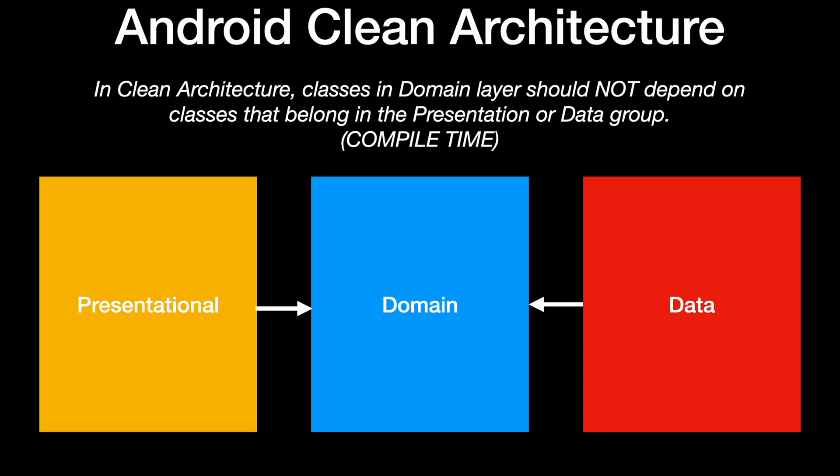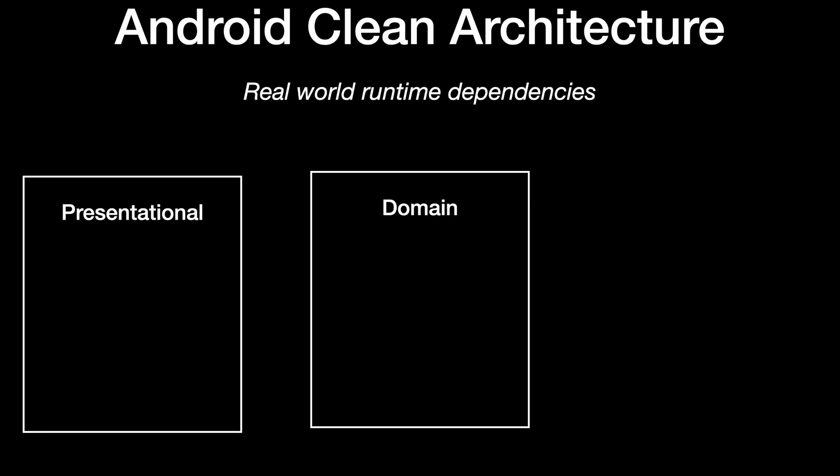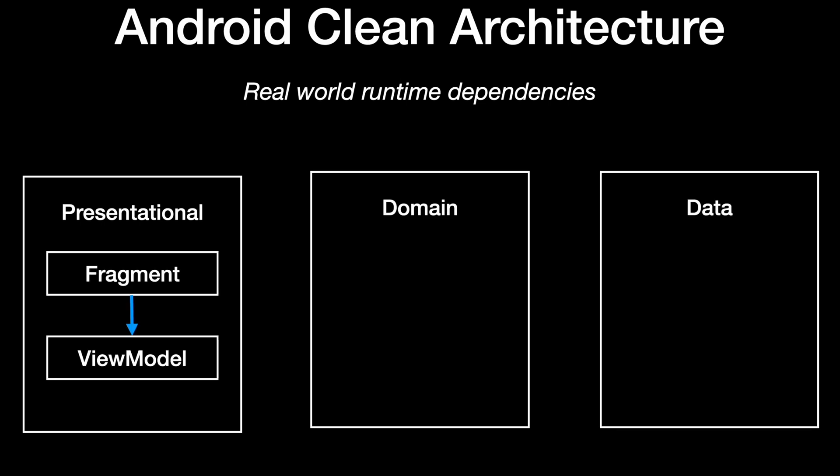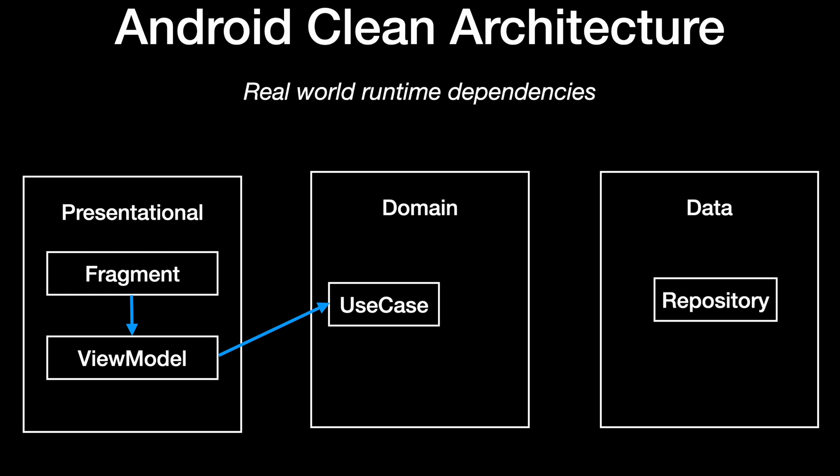Now let's picture a scenario to see how the real flow would work in an application. Let's say we need to display a list of items fetched from a server. The fragment, belonging in the presentational group, references the view model — which is also presentational — to request a list of items. Then the view model will request the data from a use case as we cross the boundary and enter the domain layer. The use case will be responsible for requesting the data from a repository in the data layer, crossing another boundary. The use case will then perform some business logic on the data, such as filtering what shouldn't be shown, combining data with another source, or talking to a different use case.